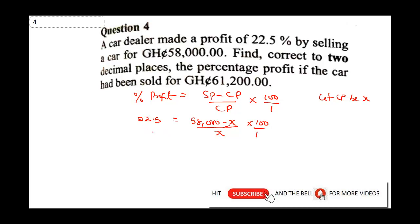At this point, all we need to do is bring the 100 down to this side. So this would be 22.5 over 100 equals 58,000 minus X all over X. Notice what we just did here is we brought down this 100. If you decide to cross-multiply again and move this 100 to this side, you're going to get back your original equation.